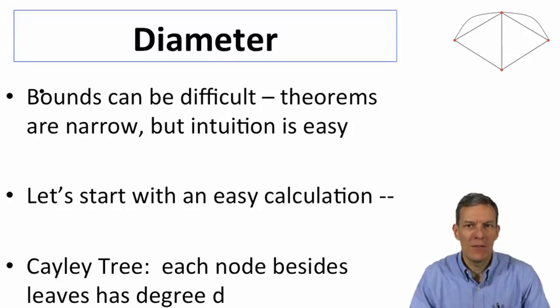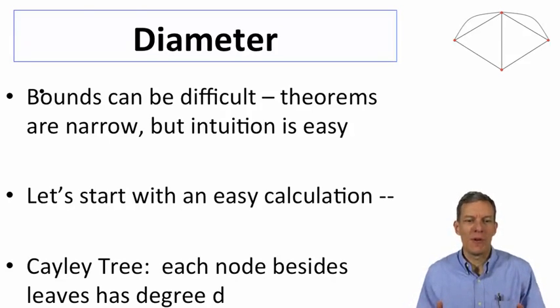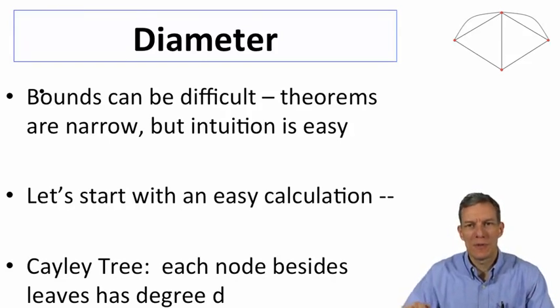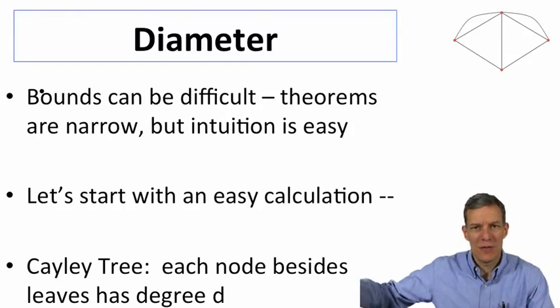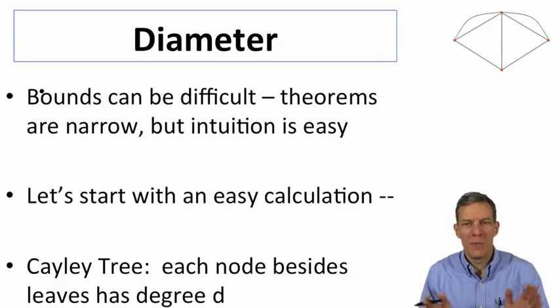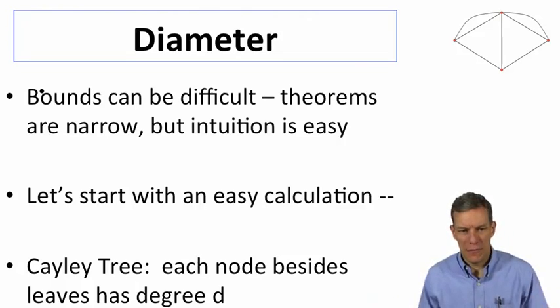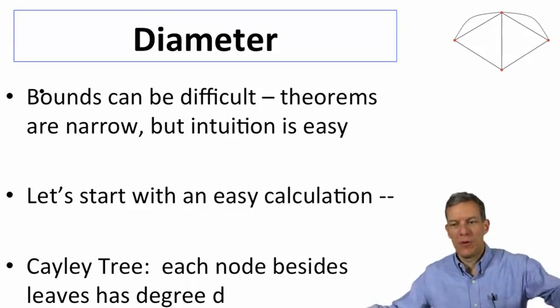So what we can start with is a very easy calculation. Let's suppose that we had something which is a very regular tree, what might be known as a Cayley tree. Each node besides the very end nodes in the tree are going to have degree d. So let's start with some degree d, say four.